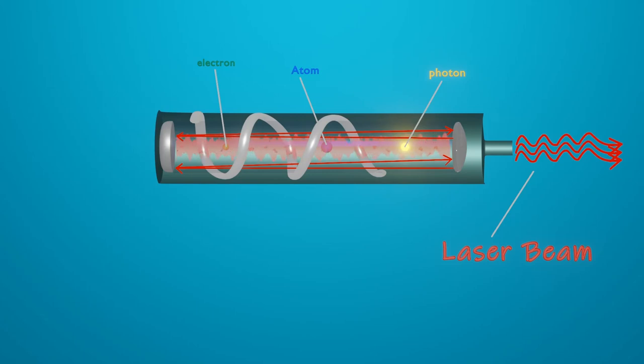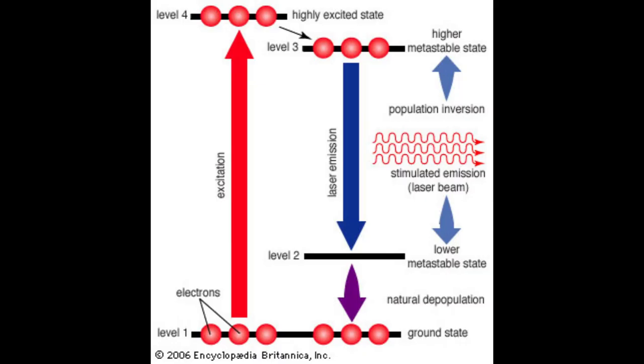The two mirrors keep the photons bouncing back and forth in the medium, but one of the mirrors is slightly less reflective and lets some of the photons through.